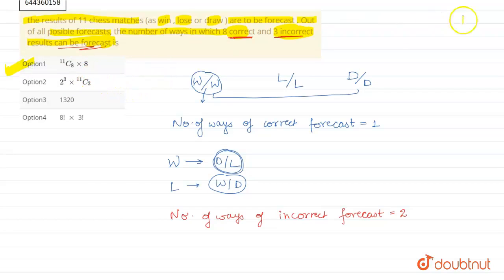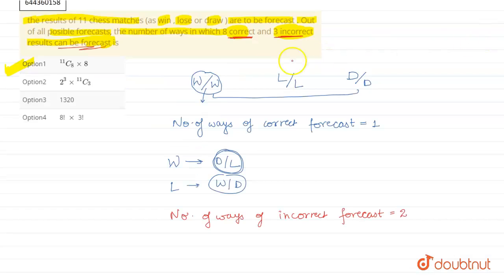Now let's see, we got 11C8 into 8. Now we know that by the property of permutation and combination, nCr can be written as nC(n-r). So on applying this property here, we can write that 11C8 into 8 is nothing but 11C(11-8) into 8, which is nothing but 11C3 into 8. Let's see if there is any option like this. Yes, this is the second option, so it is also correct.